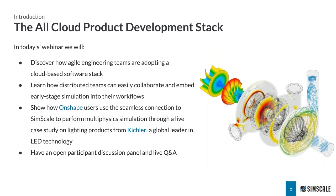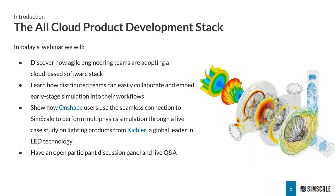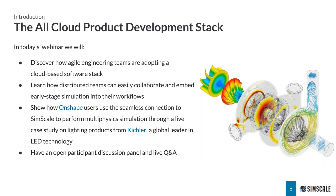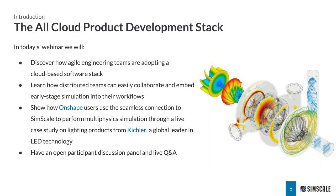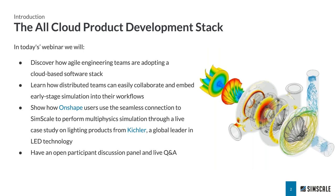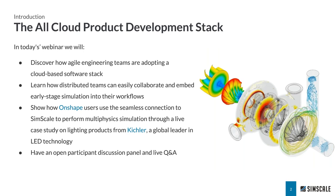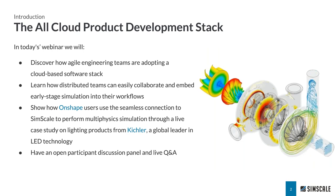I'm going to go ahead and jump right in, but before we do so, I just want to remind everybody what we're here to learn about today and give a quick overview of our presentation. First off, we're going to have a discussion with Aaron from Onshape. He's going to highlight the key benefits of their cloud-centric design platform to explain how modern product design teams can become more agile in their workflows. After this, you're going to hear directly from one of our successful mutual customers. That's going to be Josh Levine at Kichler Lighting, and he's going to talk about how his group has deployed the all cloud development stack of both Onshape and SimScale successfully. We're also going to have a lively discussion and Q&A at the end.